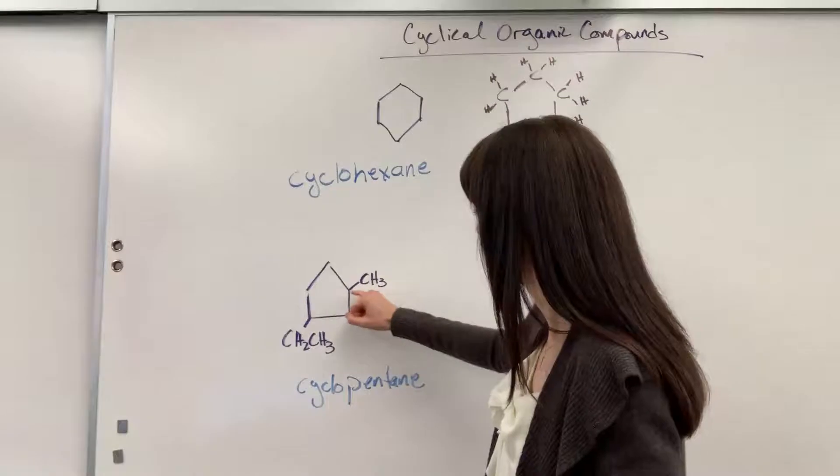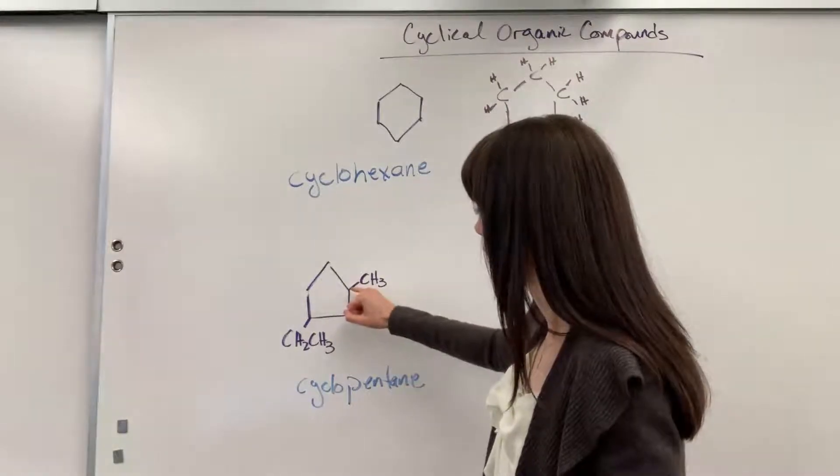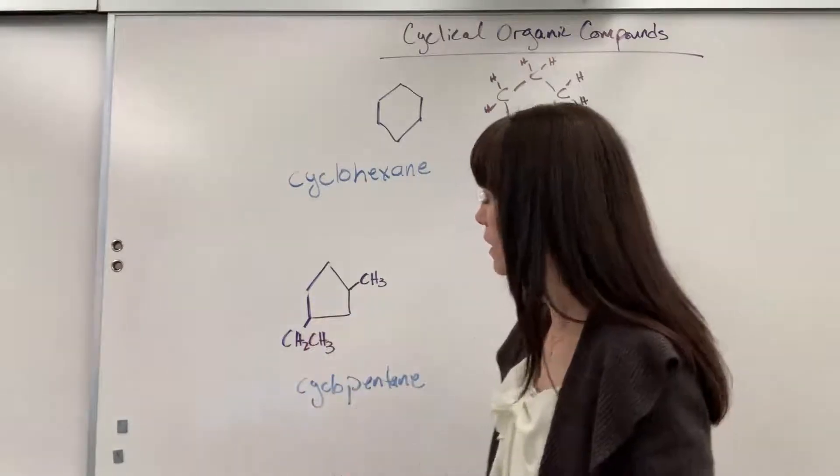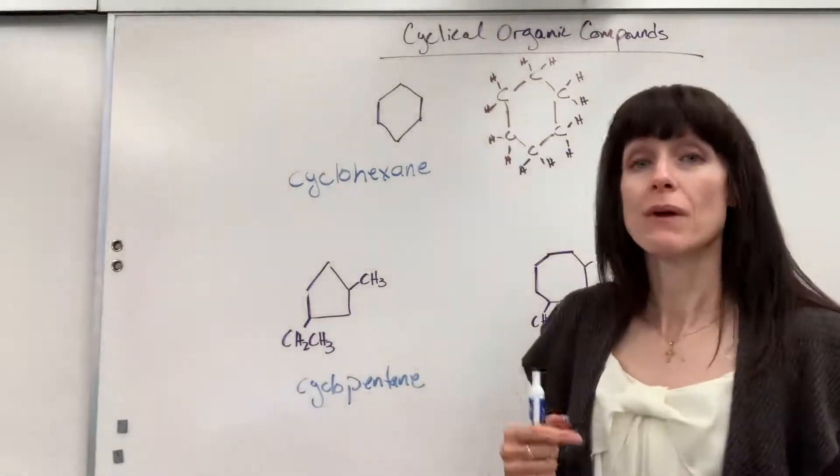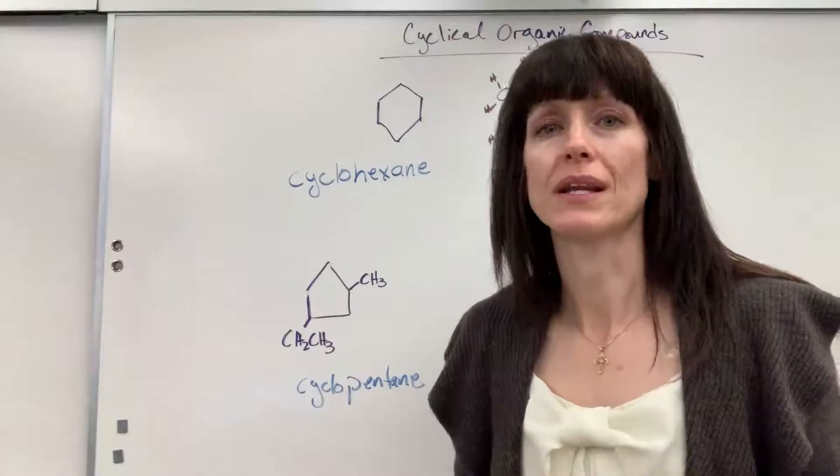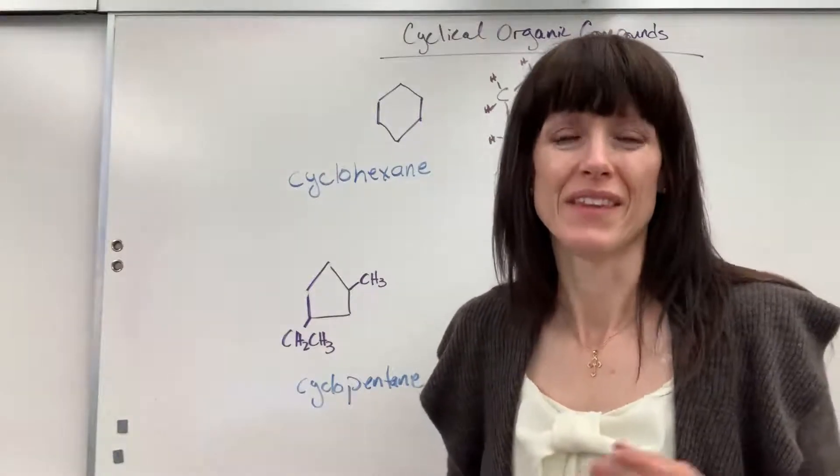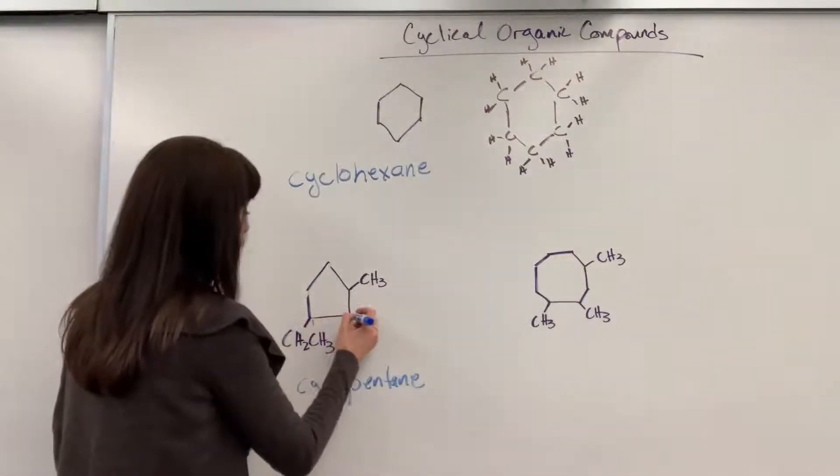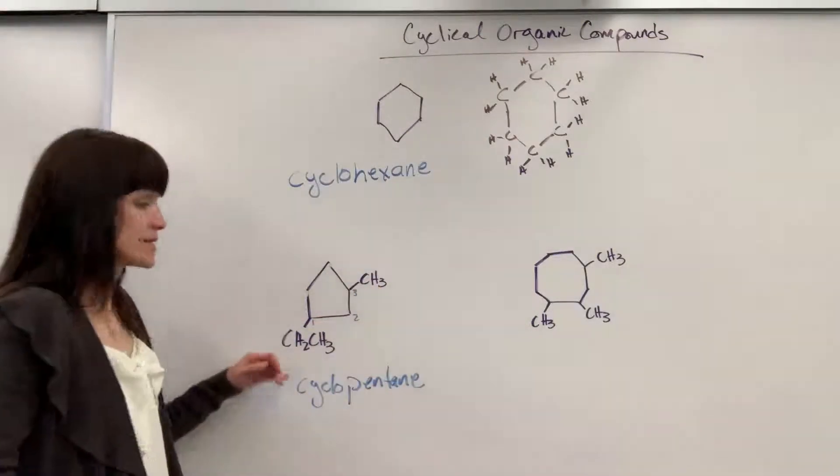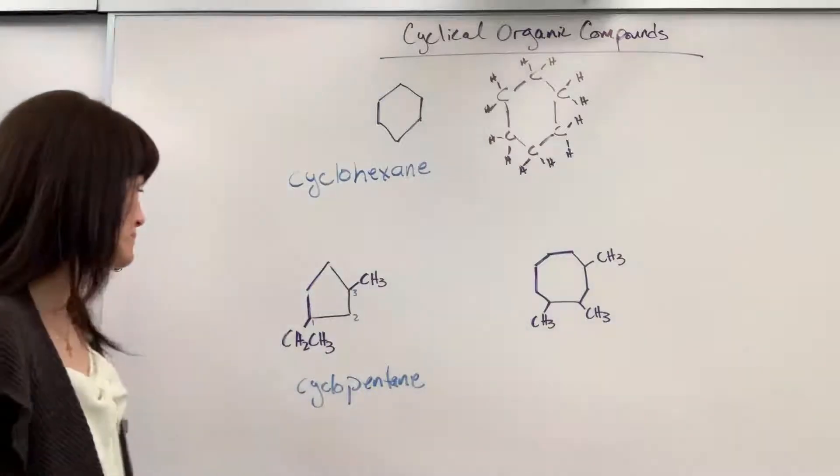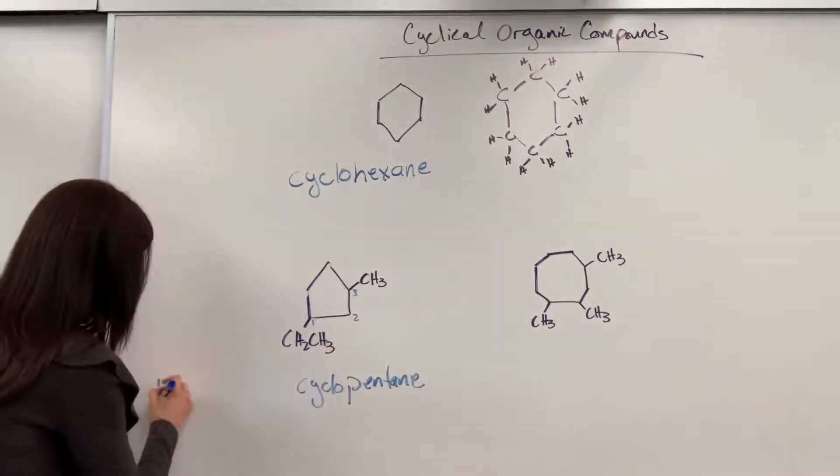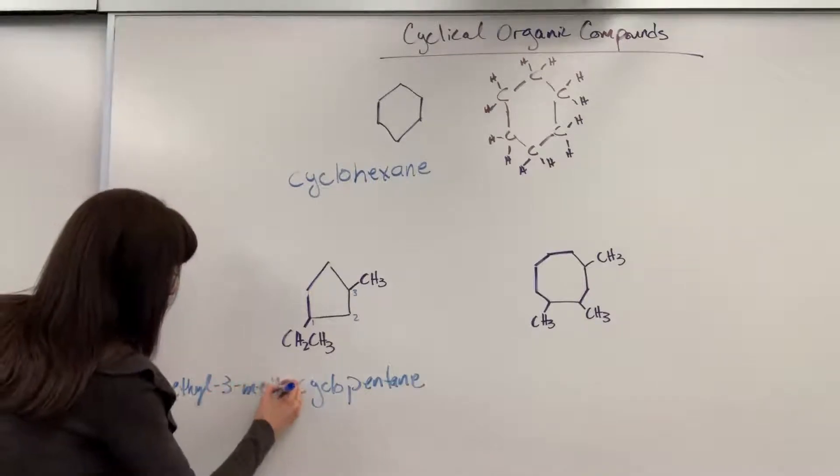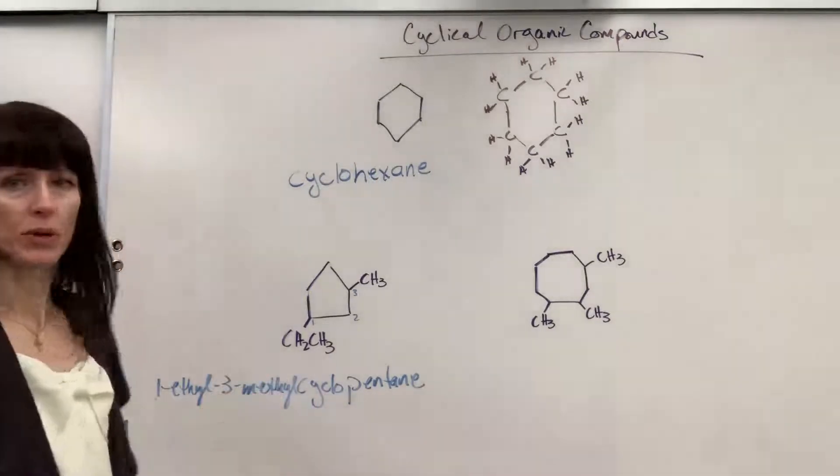I could have the one on the methyl group or we could have the one on the ethyl group. So when we write methyl and ethyl, we always write it in alphabetical order, that the ethyl will be first. So I'm going to go ahead and make this our one carbon, two, three, since the ethyl is going to be written first. So this will be a 1-ethyl-3-methyl-cyclopentane.